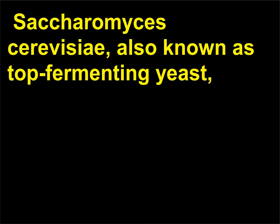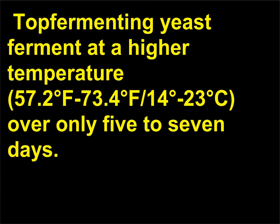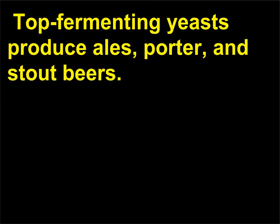Saccharomyces cerevisiae, also known as top-fermenting yeast, is distributed throughout the wort and is carried to the top of the fermenting vat by carbon dioxide (CO₂). Top-fermenting yeast ferments at a higher temperature — 57.2°F–73.4°F (14°C–23°C) — over only 5 to 7 days. Top-fermenting yeasts produce ales, porter, and stout beers.